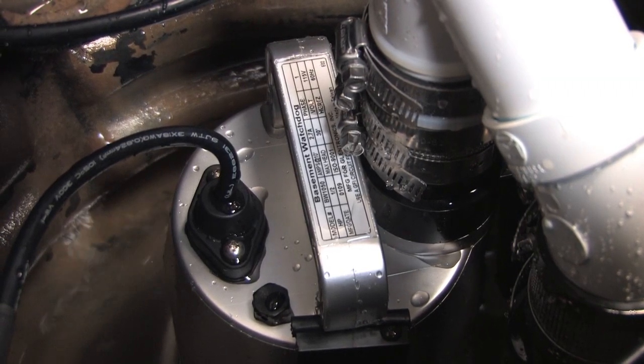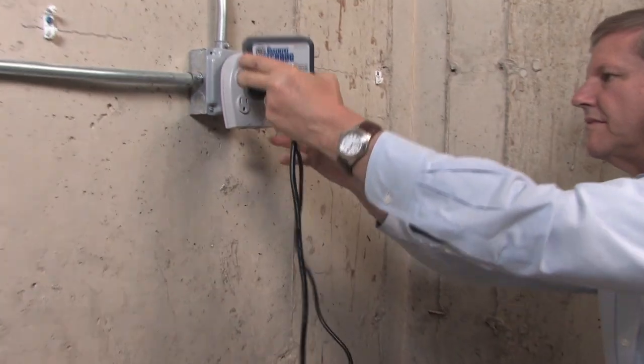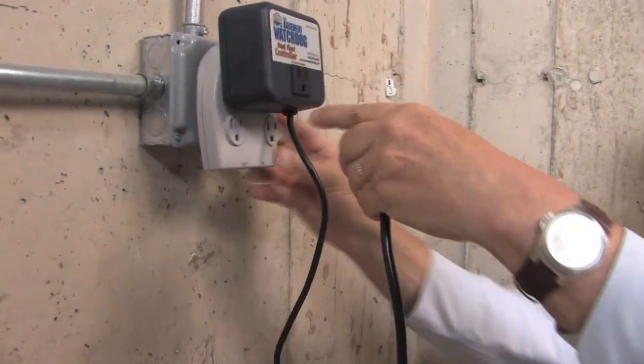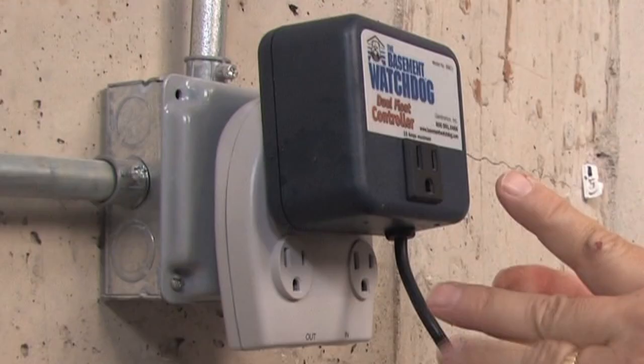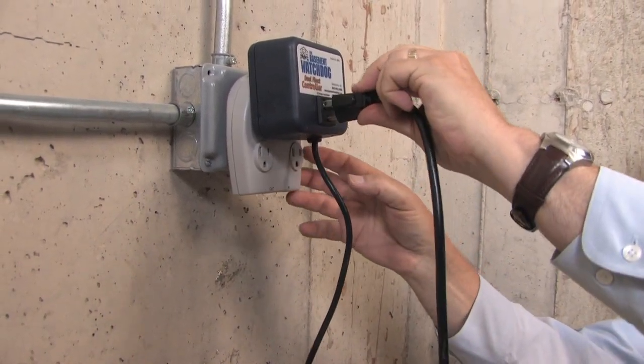Now plug in the primary pump. Plug the piggyback controller into a properly grounded three-prong outlet. Then plug the primary pump into the receptacle on the controller.